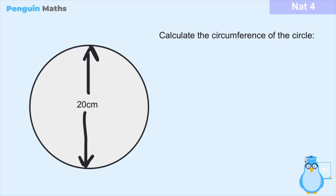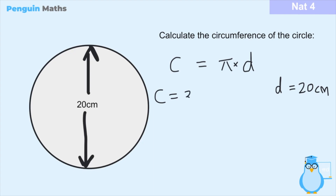Here we have an example problem where we have a circle with a given length of 20 centimeters and we've been asked to calculate the circumference. We know that circumference C = pi × diameter d. From the diagram, the length of 20 centimeters is the diameter because it passes through the centre point and connects one side of the circle to the other. So d = 20 cm, therefore C = 3.14 × 20 cm, which gives a circumference of 62.8 centimeters.